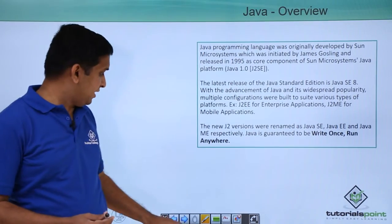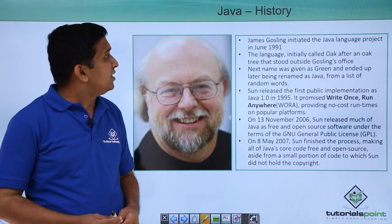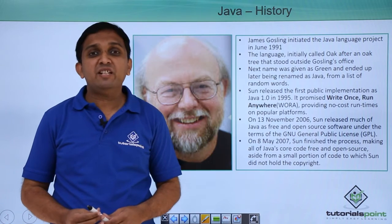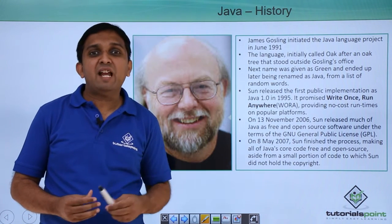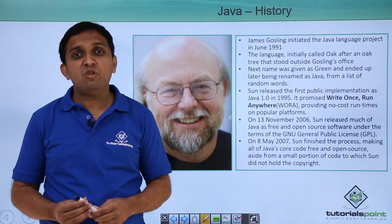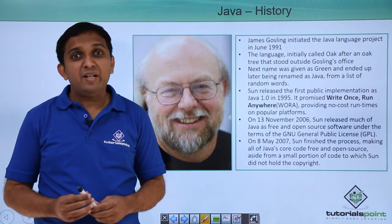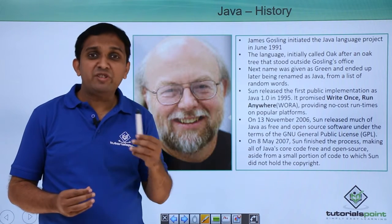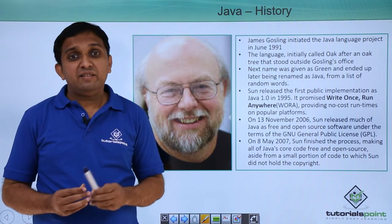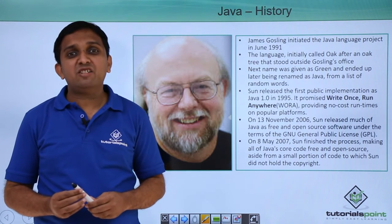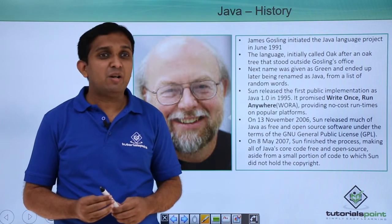The next slide is regarding history of Java. James Gosling initiated the Java language project in June 1991. The initial name given to the language was Oak, because there was an oak tree outside Gosling's office. This name was later renamed to Green, but the name Green could not last longer either, and the final name selected for the language was Java.